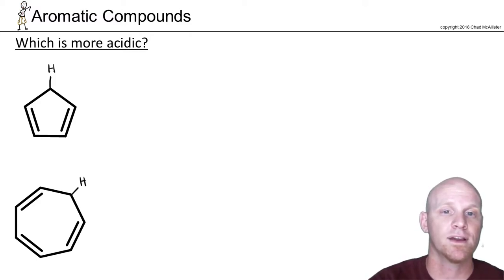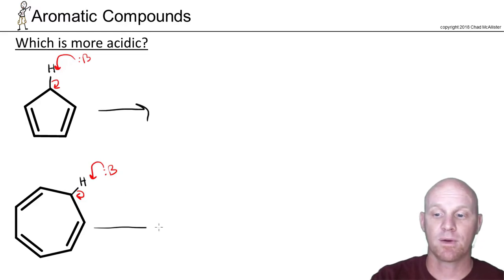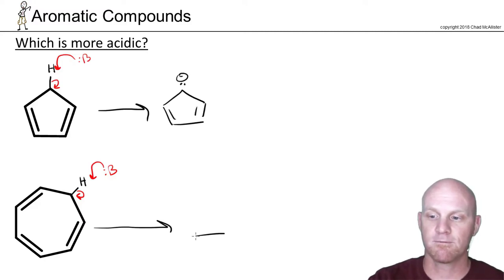We're going to deprotonate each of these structures, so we're going to have some base come along and pull off a hydrogen. Let's take a look at what the conjugate bases would look like, because by ranking those that can give us a better idea of how strong these acids are. In this case we'd get this species, and in this one we'll get this species.